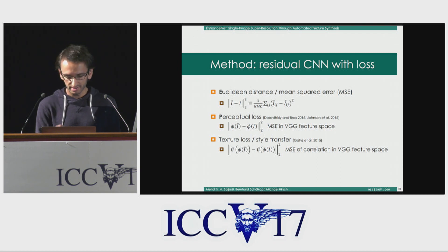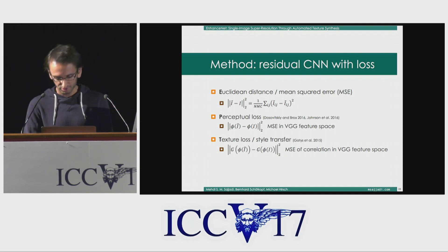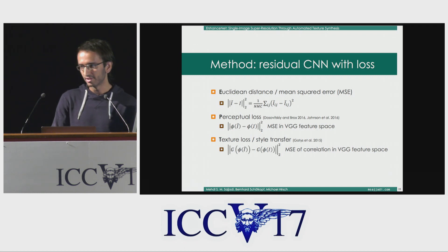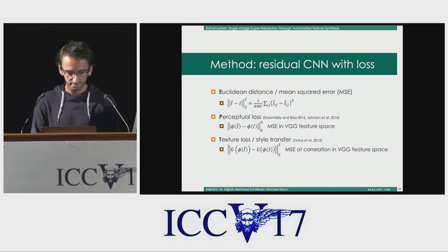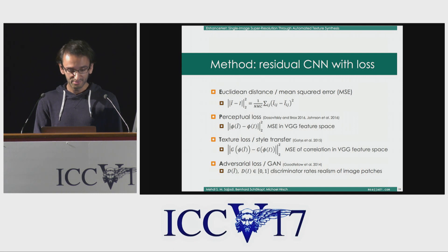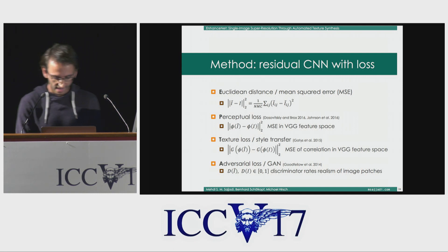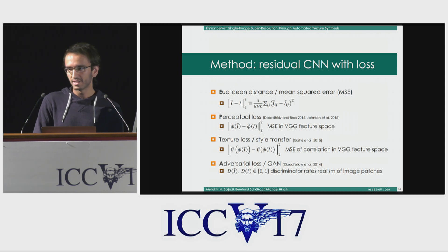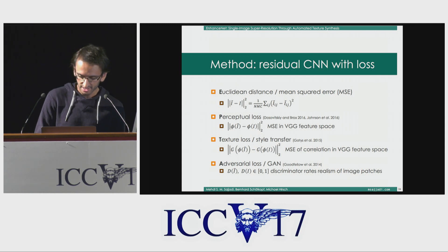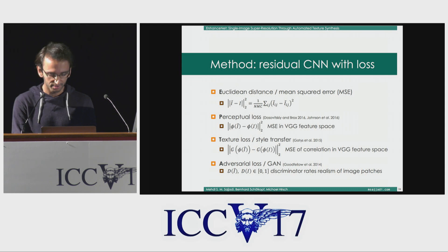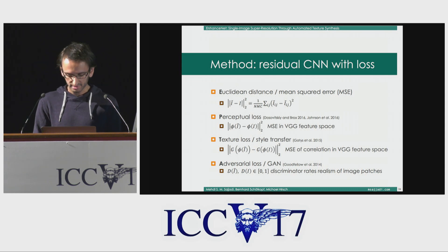These correlations between features have been shown to capture textures in natural images very well, and this is exactly what we want in super resolution — good looking and realistic textures. The fourth loss is the adversarial loss. We add a discriminator to the training: the discriminator gets either a patch from a real image or an estimated image and has to decide if it's real or fake. This encourages EnhanceNet to produce sharper and more realistic images.